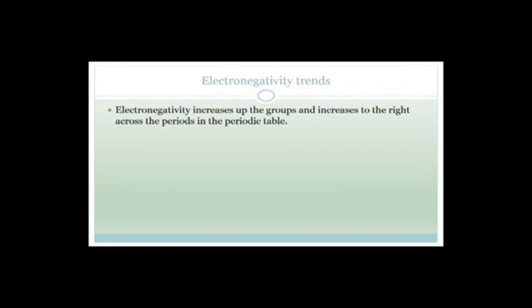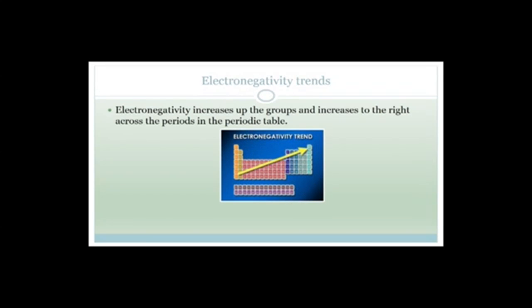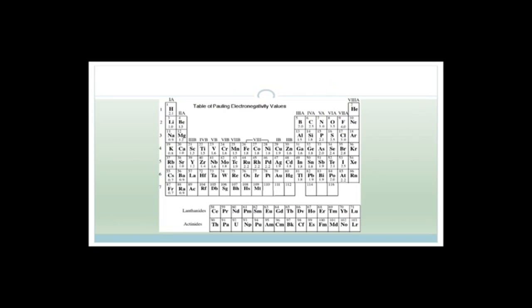So now let's talk about the electronegativity trends. Electronegativity increases up the groups and increases to the right across the periods in the periodic table. So it goes basically from bottom left to top right — we already mentioned that with fluorine being four. Cesium and francium are at 0.7. Electronegativity increases as you go from left to right: 0.7, 0.8, 0.9, 1, 1.5, 2, 2.5, 3, and so on — you can see it goes up as you go across from left to right.